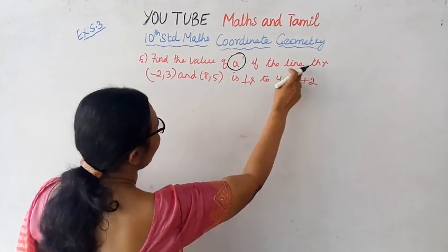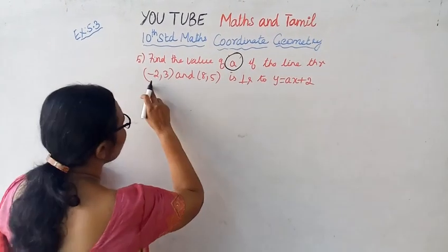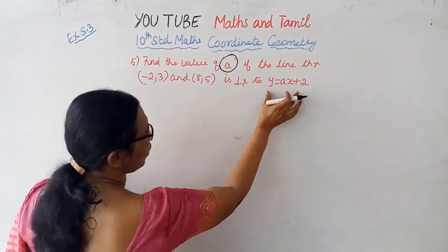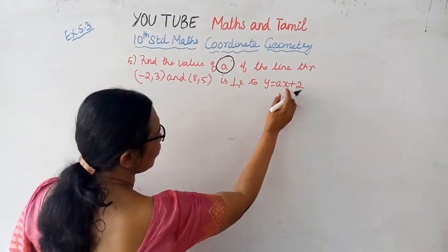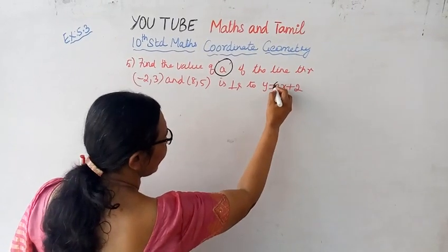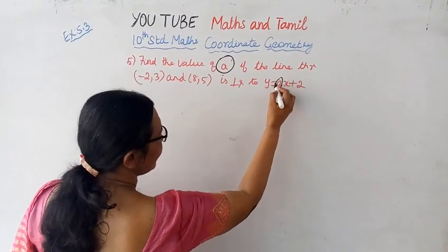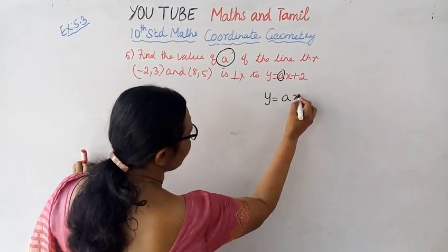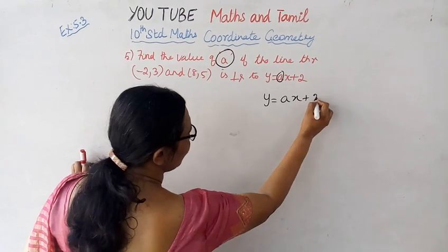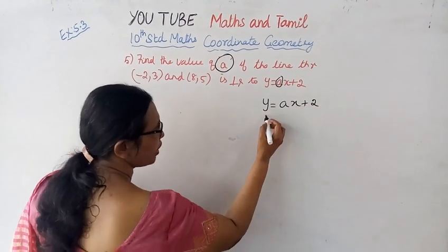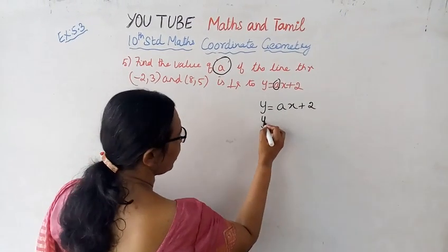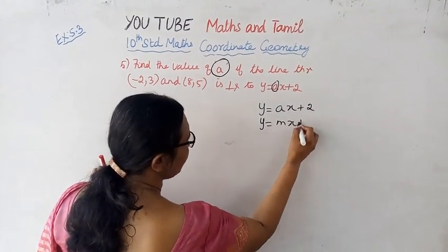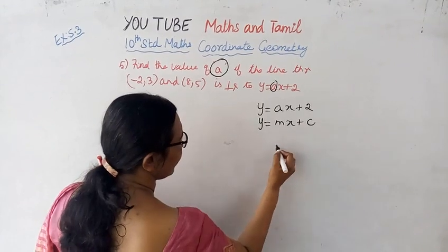If the line through 2 points is perpendicular. Here A is the slope. Y is equal to AX plus 2. This is in the form Y equal to MX plus C.